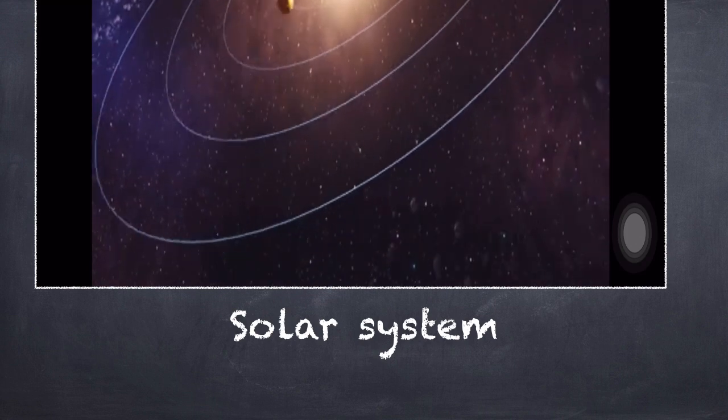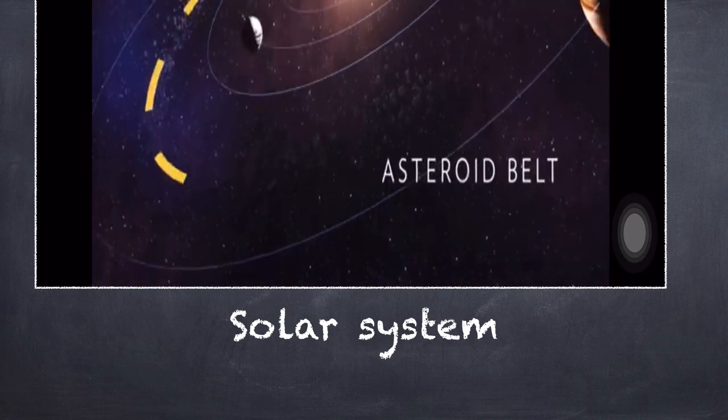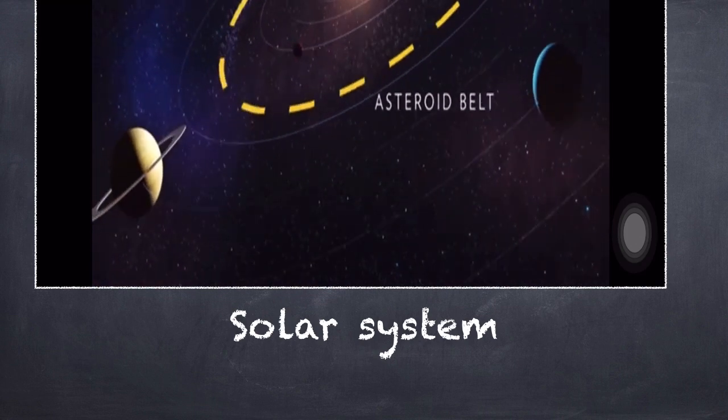Orbiting the terrestrial planets is the asteroid belt, a flat disk of rocky objects full of remnants from the early solar system.